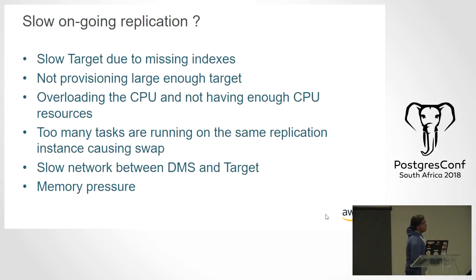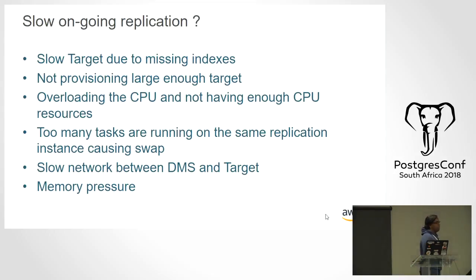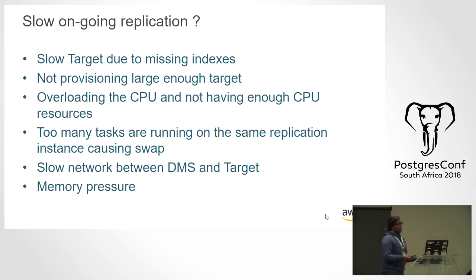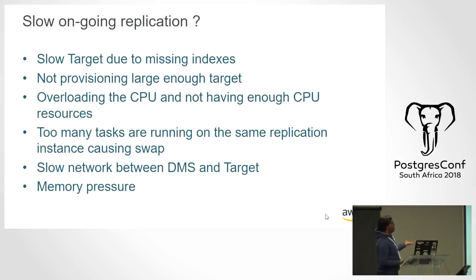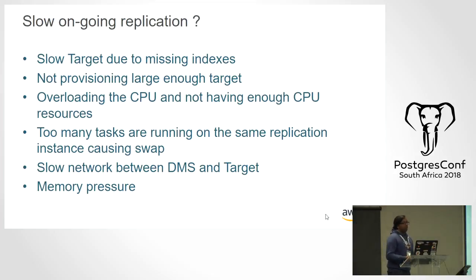For slow ongoing replication, key things to look out for: missing indexes on the target cause full table scans for inserts, updates, and deletes; the target may not be provisioned enough to handle incoming changes; DMS resources may be overloaded; or there may be memory pressure on your source or target systems.